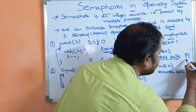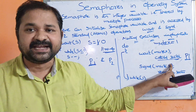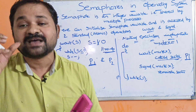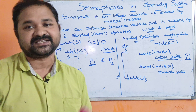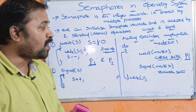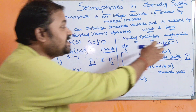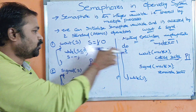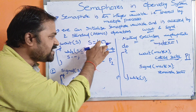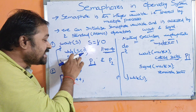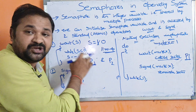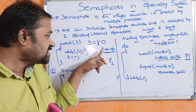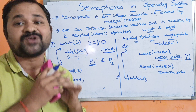While P1 is in the critical section, no other processes are allowed to enter. Assume P2 tries to enter, so P2 executes wait(mutex). The mutex value was changed to 0. Now S = 0. While S is less than or equal to 0: 0 is less than or equal to 0 — condition is true. So P2 cannot enter into the critical section and must wait.